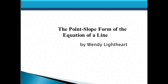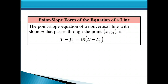Hi, this is Wendy Lightheart, and in this lesson we're going to be taking a look at the point-slope form of the equation of a line. The point-slope equation of a non-vertical line with slope m that passes through the point x1, y1 is given by this formula: y minus y1 equals m times x minus x1. So m is the slope, x1 is the x-coordinate of a point on the line, and y1 is the y-coordinate of the same point on the line.